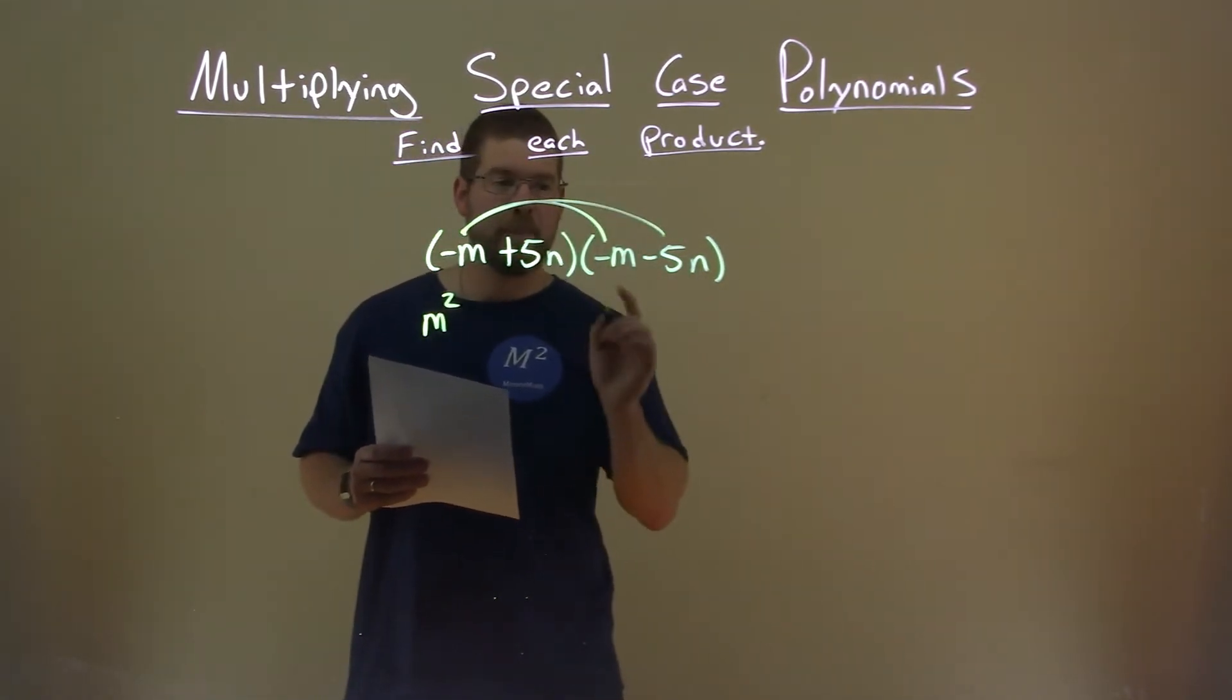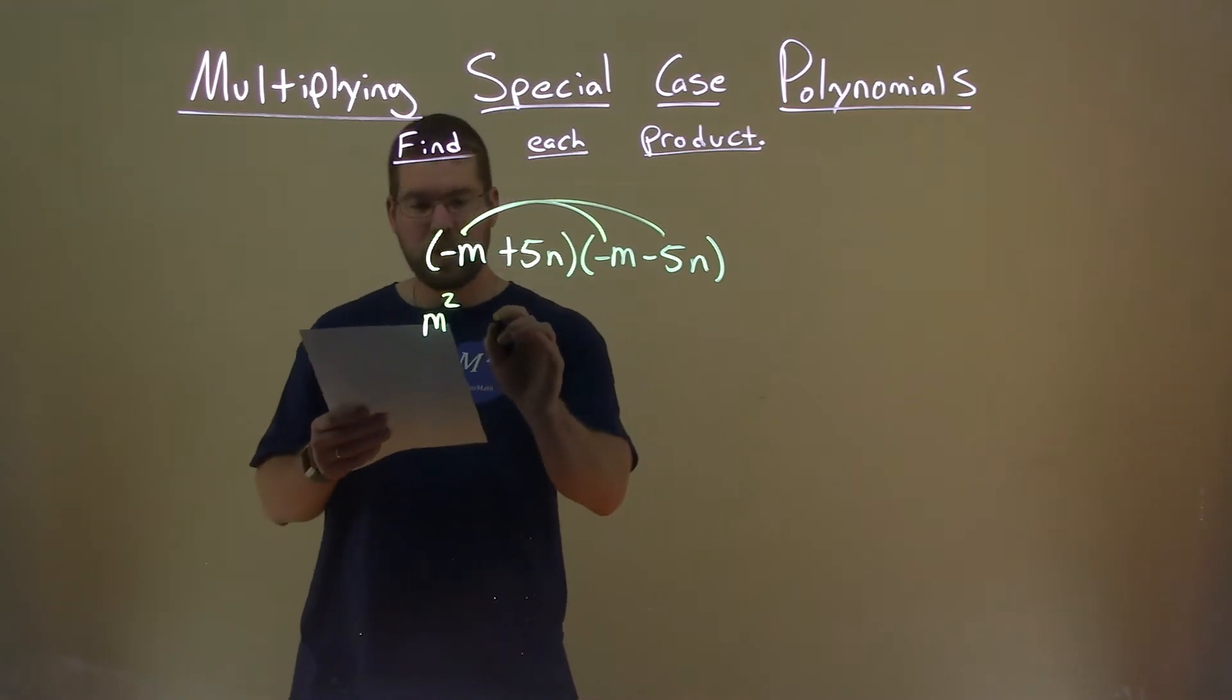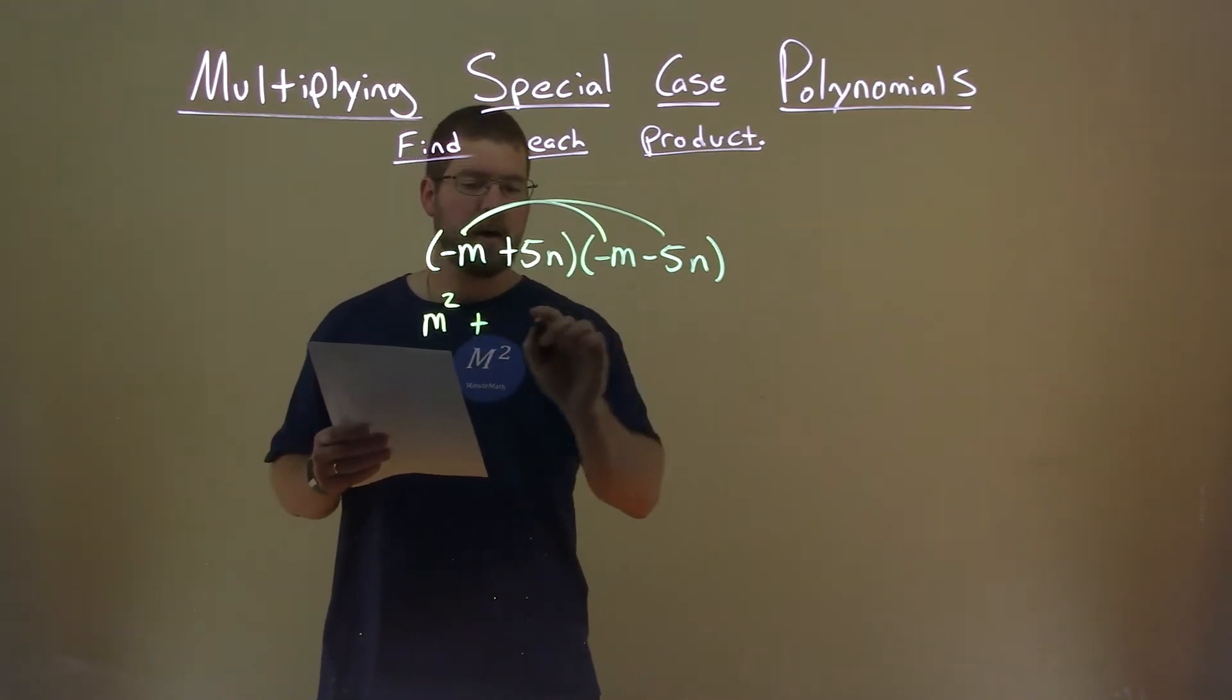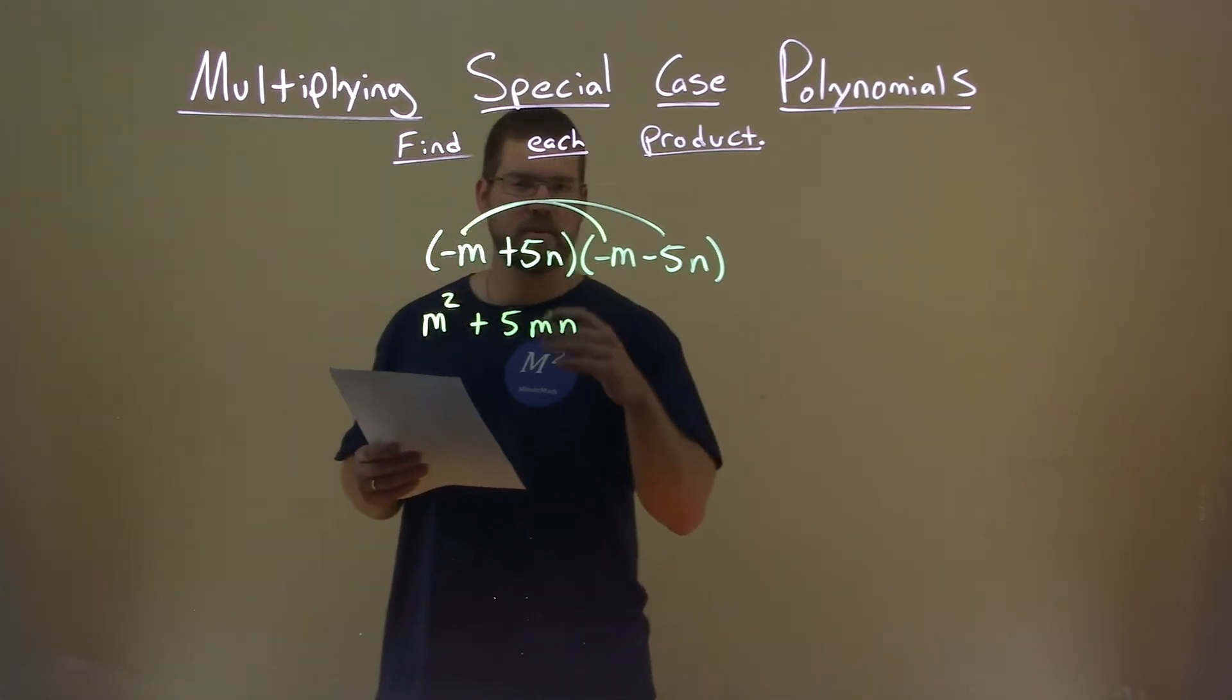Negative m times minus 5n becomes a positive. Negative times a negative is a positive, so positive 5mn. They're not like terms, so we can't square them.